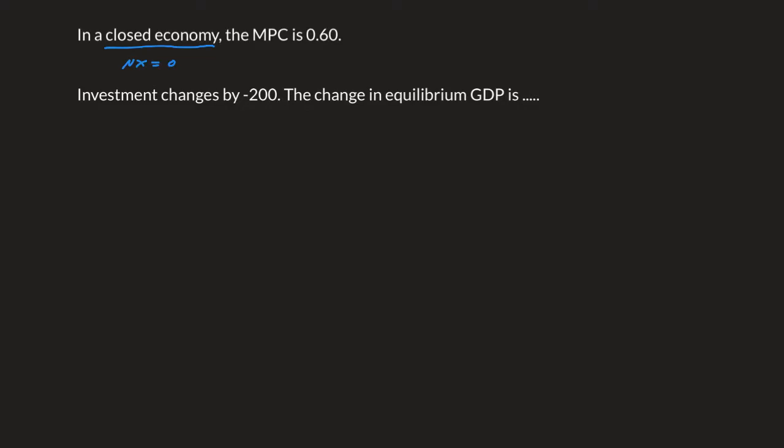The MPC is 0.6, which means how much consumption changes given a change in disposable income. Again, not really needed for this question, but just so we understand what's given. Investment changes by -200.